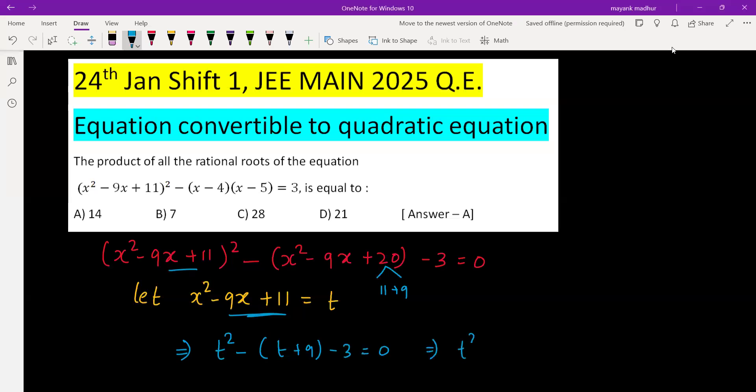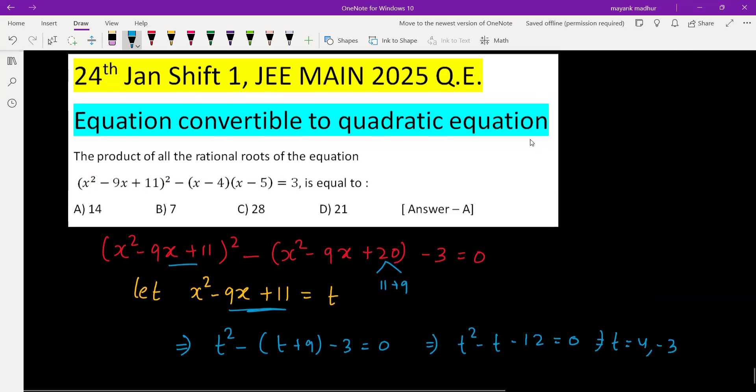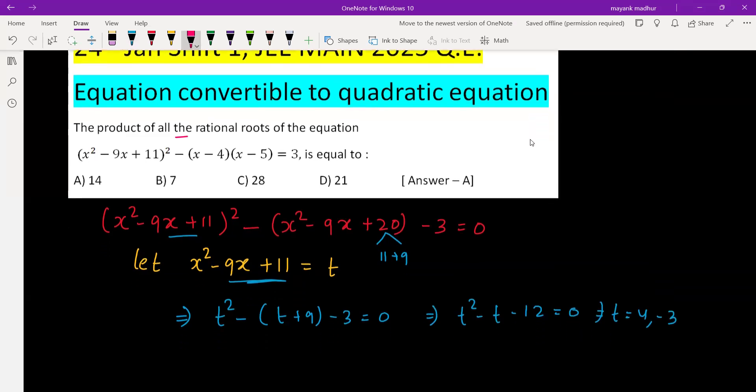So it will be t² - t - 12 is equal to 0, which is a quadratic in t and you can easily solve it. It will be 4 and negative 3. But we need the product of all the rational roots of the equation. Original variable is x, so you have to go back to x. x² - 9x + 11, which is t, is now equal to 4 or negative 3.